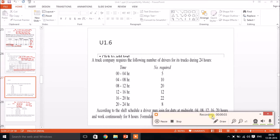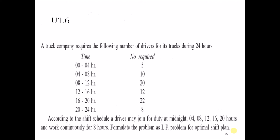In this tutorial we are going to learn some more examples of linear programming problems. A truck company requires the following number of drivers during 24 hours. The time allocation is given: from 0 to 4, 5 drivers are required; from 4 to 8, 10; from 8 to 12, 20; from 12 to 16, 12; from 16 to 20, 22; from 20 to 24, 8. A driver may join duty at midnight, 4, 8, 12, 16, or 20 hours and work continuously for 8 hours. Formulate the problem as a linear programming problem to get the optimal shift.